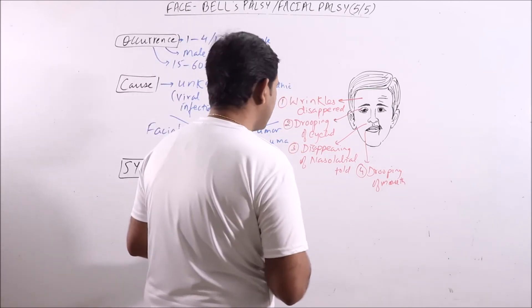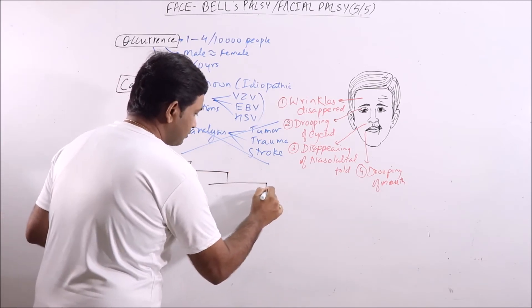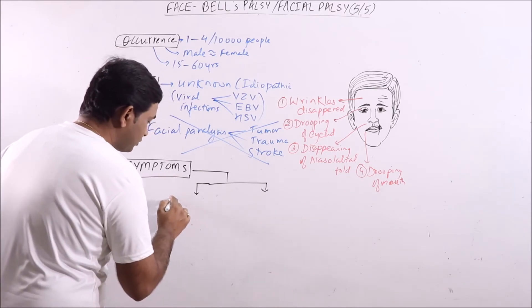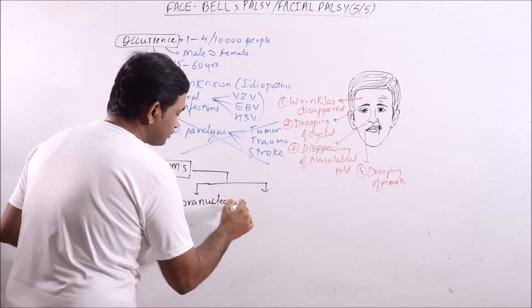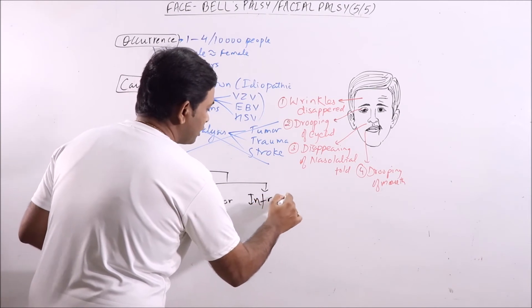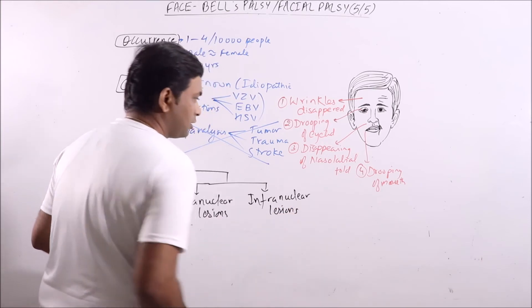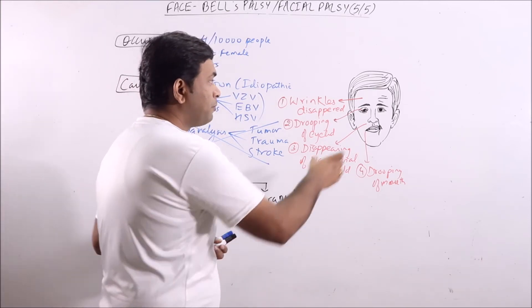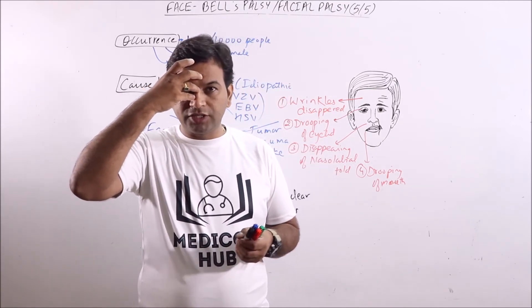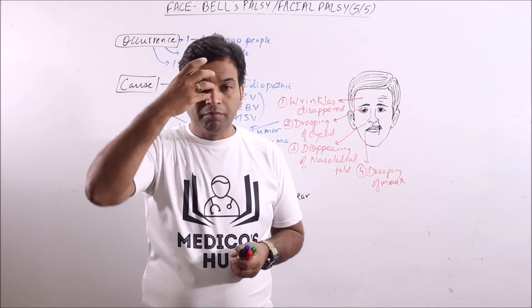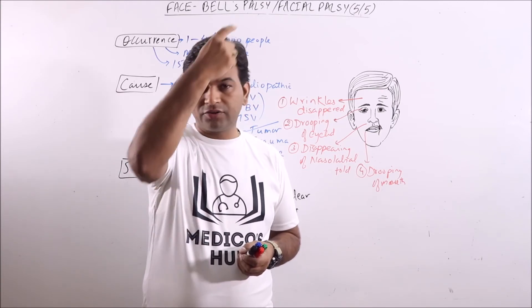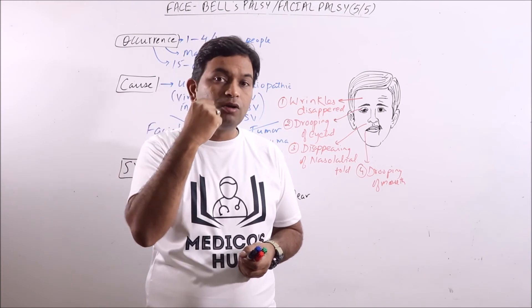The symptoms can be classified into two categories: supra-nuclear lesions and infranuclear lesions. The upper part of the face basically receives nerve supply from both sides of the facial nerve — that is, right and left. But the lower part of the face receives supply from one side only, that is the contralateral facial nerve. So the contralateral facial nerve will supply the lower part of the face, while the upper part of the face has bilateral representation.